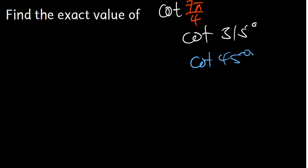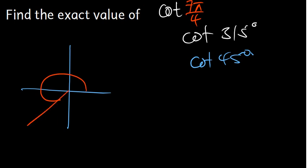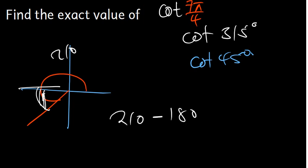Let's take an example: say we have 210 degrees. We know 210 is in the third quadrant — from the origin all the way to there. The terminal angle is the angle between the x-axis and the point of interest. To find it, we say 210 minus 180, because from the origin to the negative x-axis is 180 degrees. So 210 minus 180 gives us 30 degrees — so the terminal angle in this case is 30 degrees.